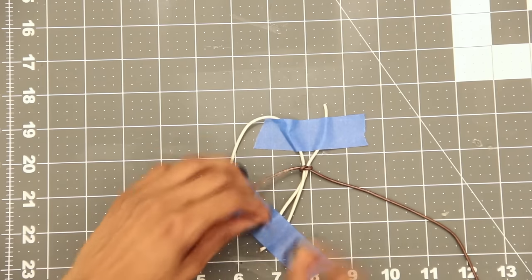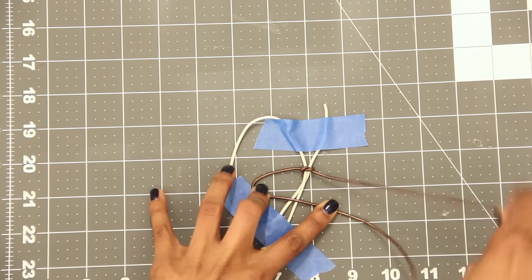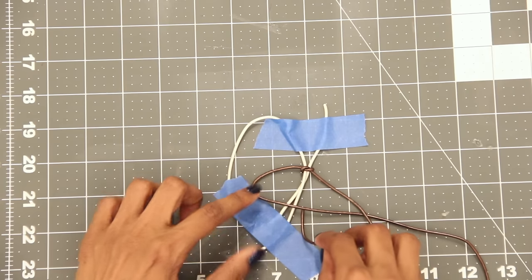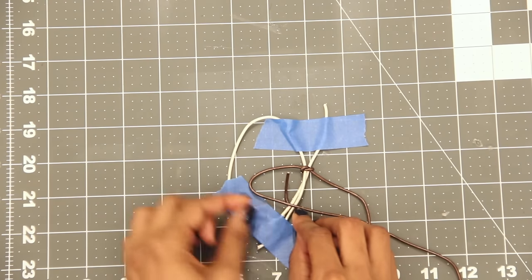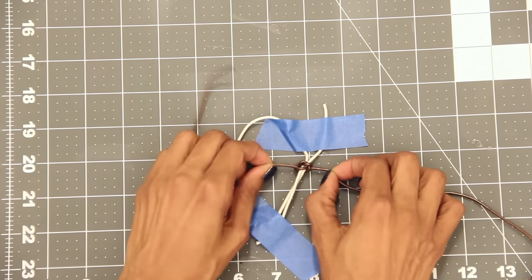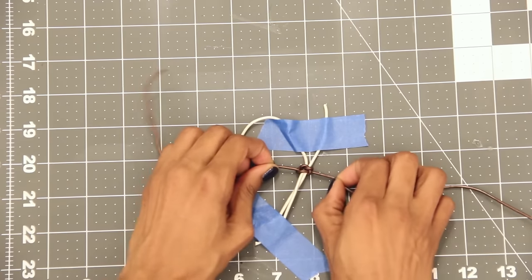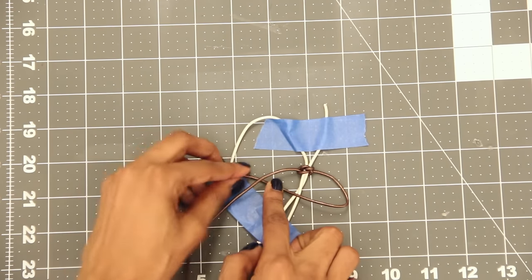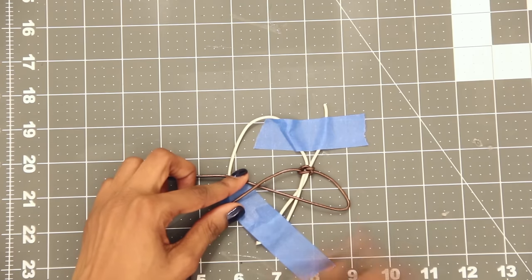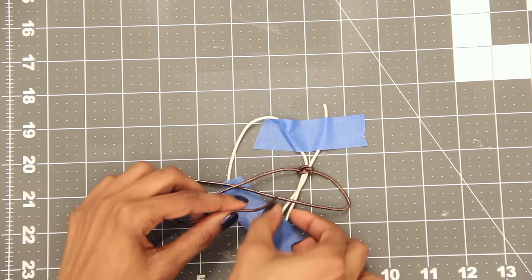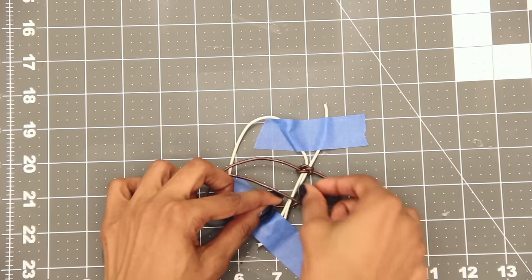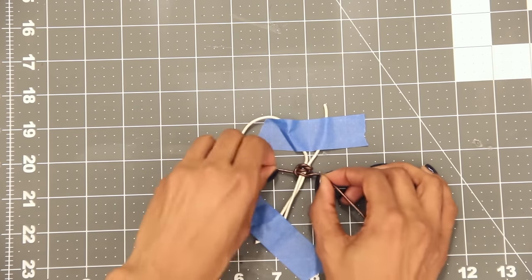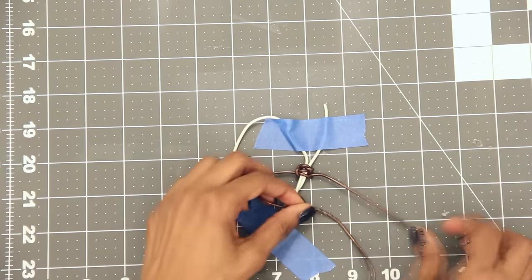Just cross the left over the middle and under the right. Now the right goes under both of those white middle strands and up through this section. Then the left goes under the middle and up through this section. Form at least three or four more square knots.